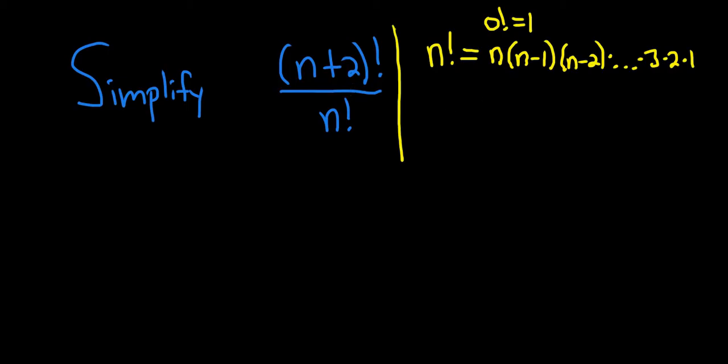Okay, so in this case we have n plus 2 factorial. So if you think about n plus 2 factorial, you always start with what you see, so it's n plus 2.